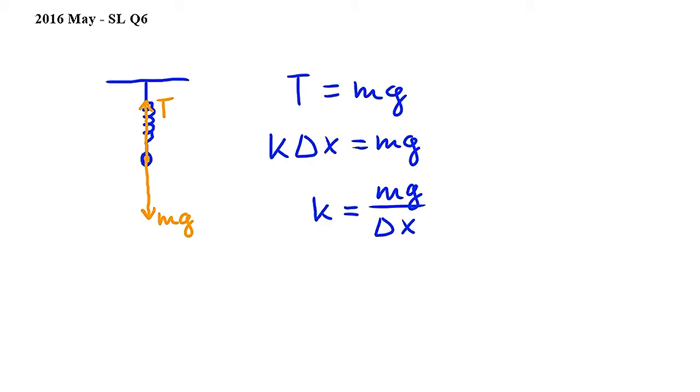In the question, we are told that L₀ is the length of the spring before the mass is attached to it, L is the length of the spring after the mass has been attached to it, and Δx is the extension of the spring.